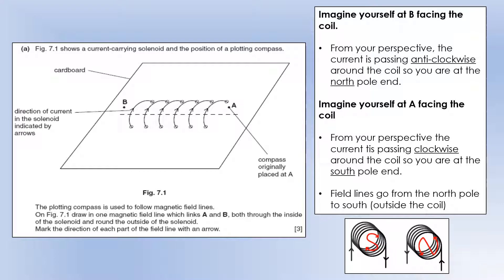Back to the question. We would get a loop that looks like this. I should have done a little bit better to make it actually go through A and B as was asked. And then we can add directions. So we said B was a north pole end, so outside the coil, the field is going to be going from B to A. And inside, therefore, it must be going from A to B like this.